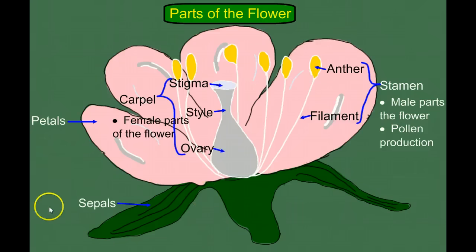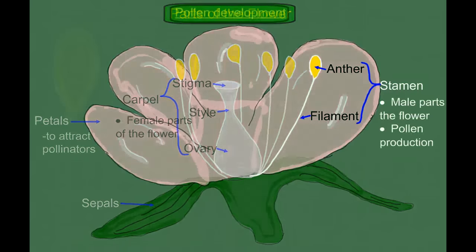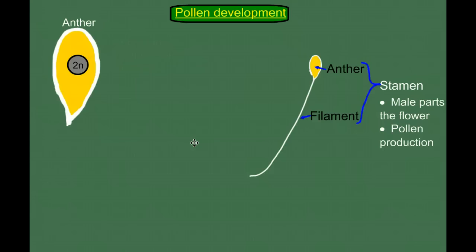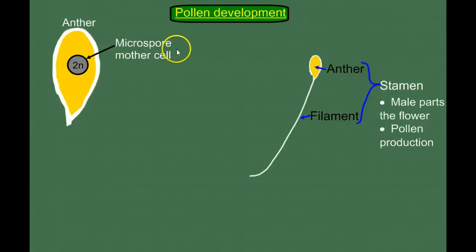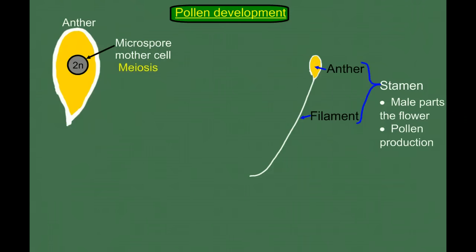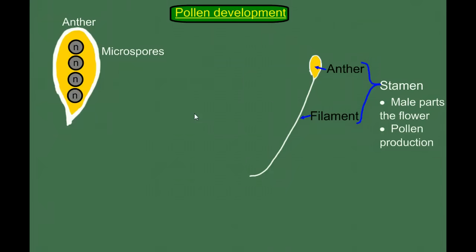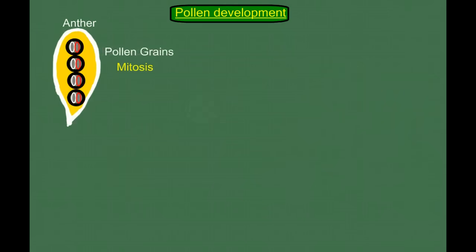We'll look at the male side first with pollen development in the stamen. If we look inside the anther, we see diploid cells. When you're looking at a flowering plant, you're seeing the sporophyte generation or the diploid generation. These cells inside the anther are called microspore mother cells. They're not spores — they're the mother cell to spores, specifically the microspores. So to become a haploid spore, they have to undergo meiosis, and inside the anther we build microspores.